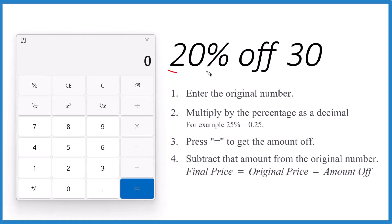This is Dr. B, and we're going to take 20% off of 30. Let's call it $30 here.